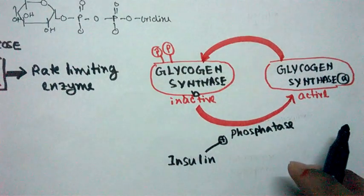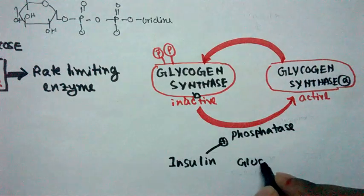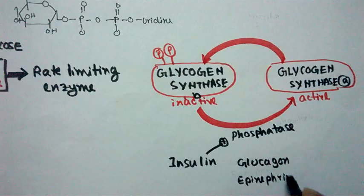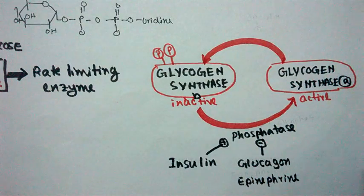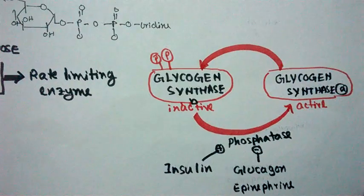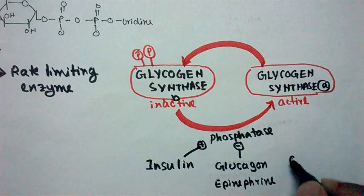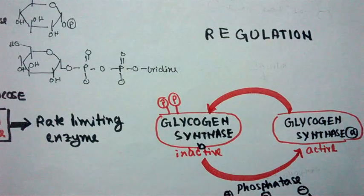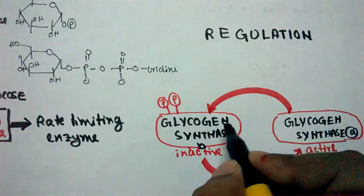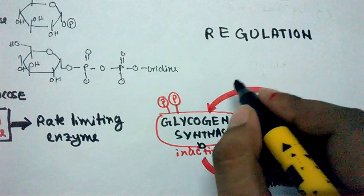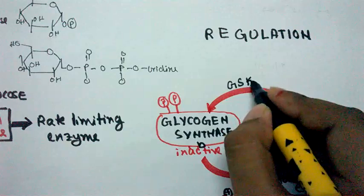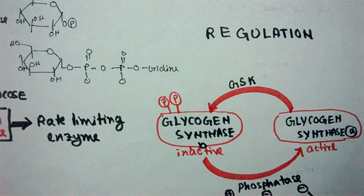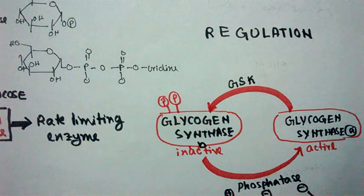Glucose gets converted into glycogen. But glucagon and epinephrine on the other side allosterically hinder phosphoprotein phosphatase. Glucose-6-phosphate also negatively regulates phosphoprotein phosphatase. On the other side, the conversion of the active form into the inactive form is triggered by GSK — glycogen synthase kinase. When glycogen synthase kinase is active, glycogen synthase becomes phosphorylated and ultimately inactive.